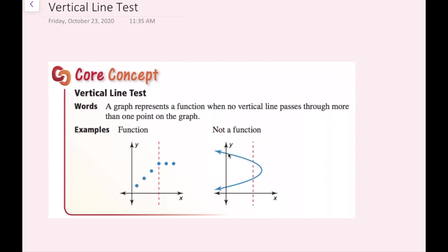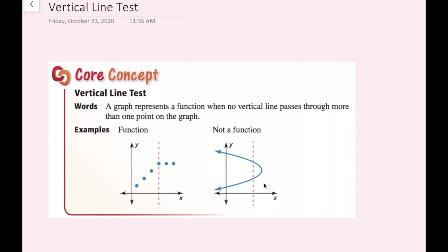If we slide a vertical line through this relation, we see that at many different x values there are multiple points. This does not pass the vertical line test. You only need to find one instance where it fails the vertical line test. In this case, this is not a function because it does not pass the vertical line test.